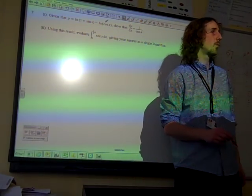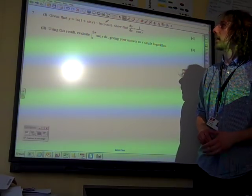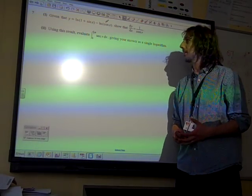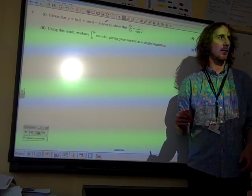Question 7, given that y is ln sin x minus ln cos x, show that dy/dx is 1 over cos x. Thanks, John.